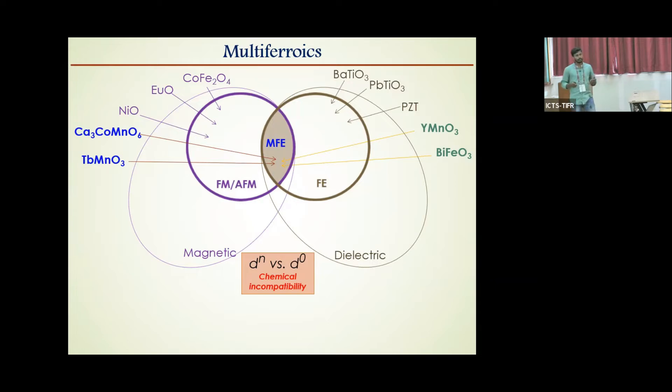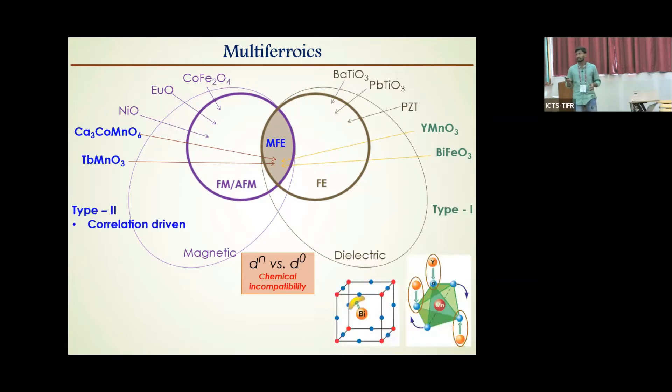Based on the mechanism of ferroelectricity, they are further classified into two types. In type one, ferroelectricity and magnetism have different origins. For example, in these materials, due to lone pair effect or geometric frustration corresponding to A-site cation gives rise to ferroelectricity, whereas B-site magnetic ion is responsible for magnetism.